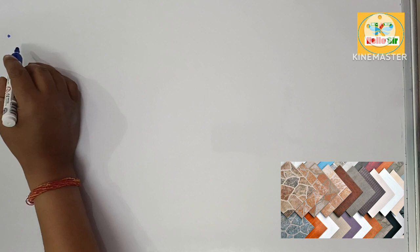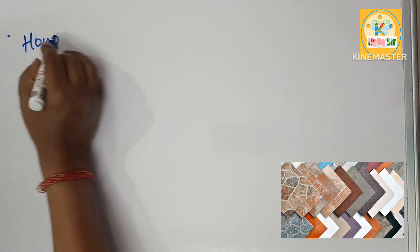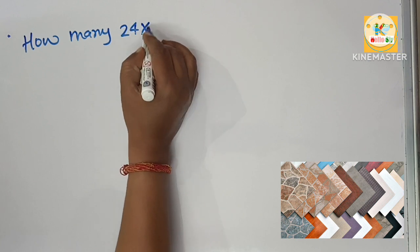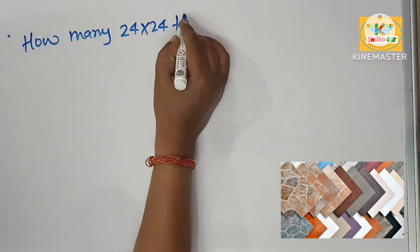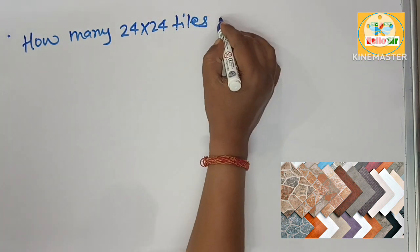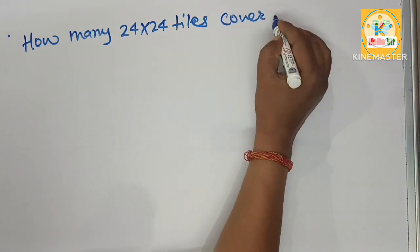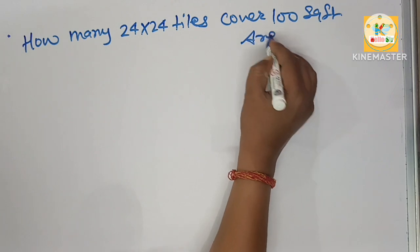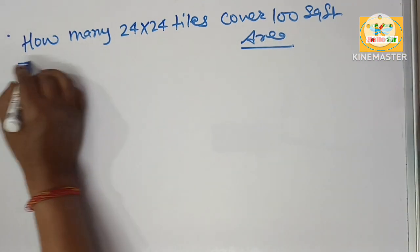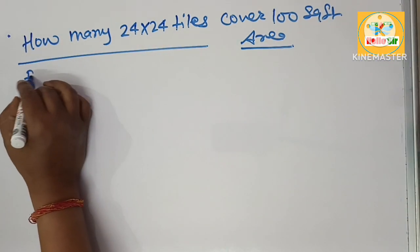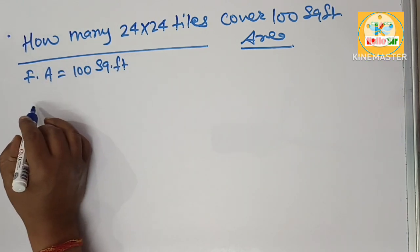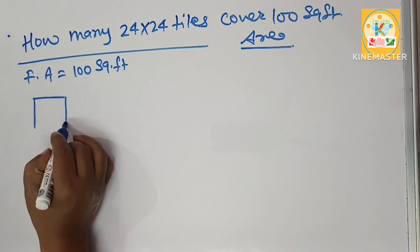In this video we know about how many 24 inches by 24 inch tiles do I need to cover 100 square foot area. Your floor area is 100 square foot. It means if you have room size 10 by 10, 10 foot width and 10 foot length.